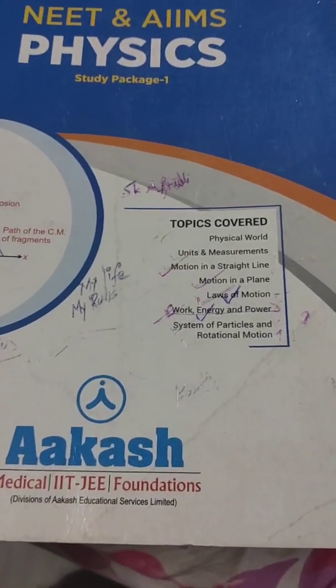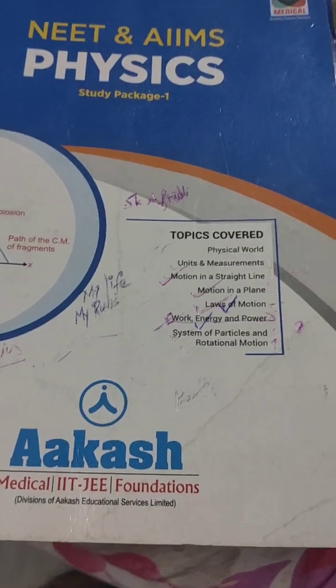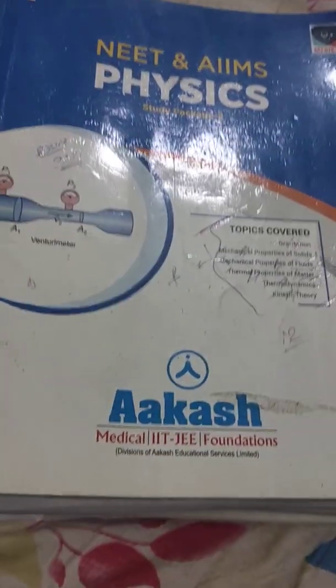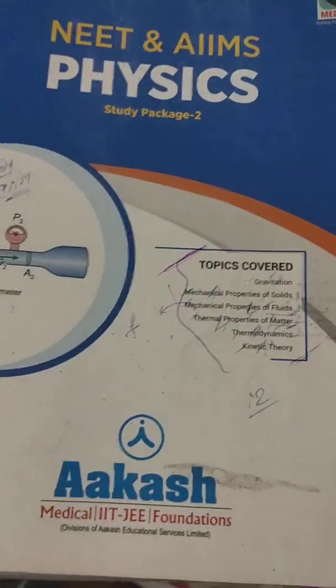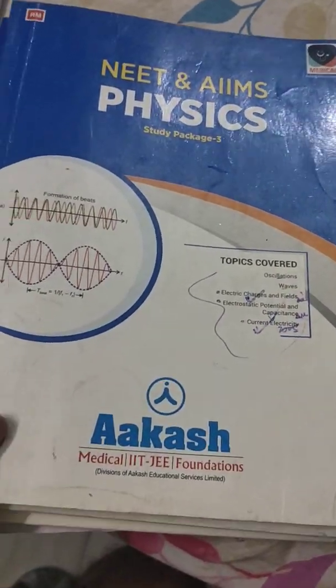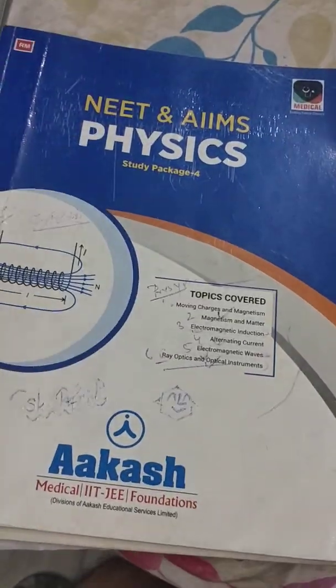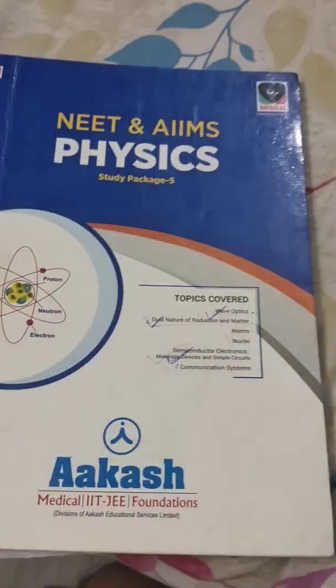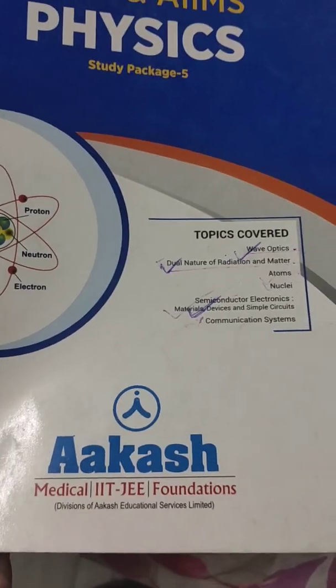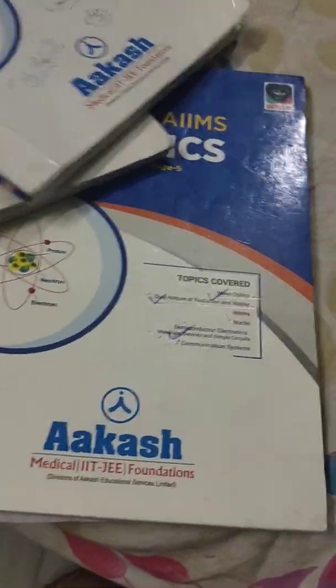This is module one. This is module two, three, four, and the last module, module five. I'll just select a random topic, suppose laws of motion.